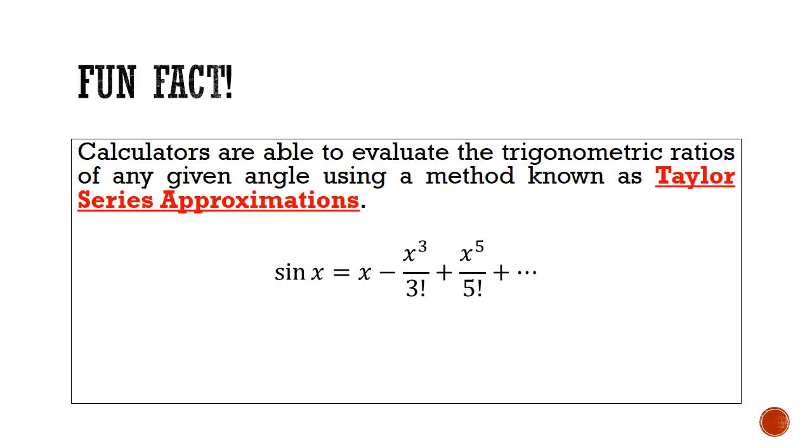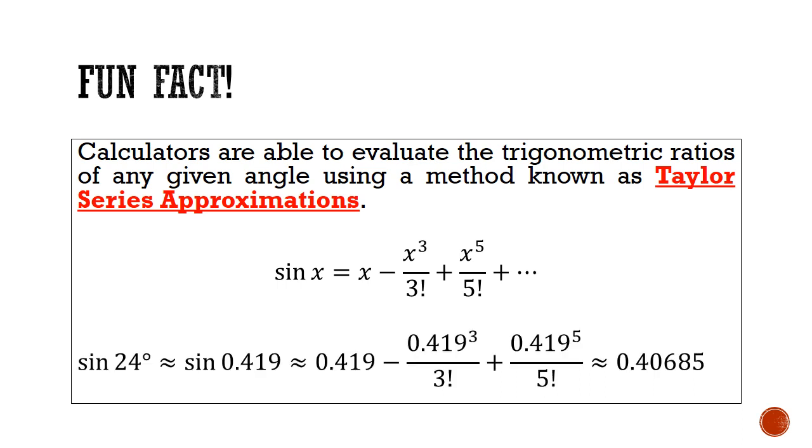Now for a fun fact here. Did you know that calculators are able to work out the trig ratios for any angle due to the Taylor series approximations? It's possible to express the sin function as an infinite polynomial where x is measured in radians. Take for example sin 24°, just taking the first three sig figs of 24 degrees in radians and plugging it into the power 5 approximation, I can get an estimate for sin 24° that is within 0.027% of the actual value. This neat trick allows calculators to work out the unknown lengths and angles for all sorts of right angled triangles.